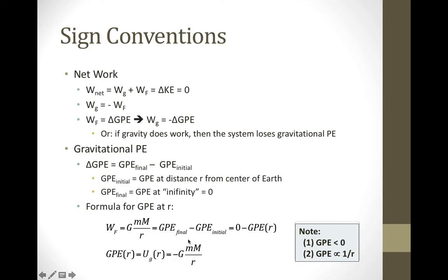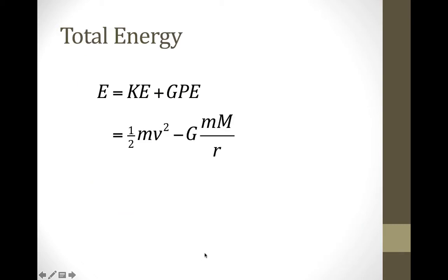Note a couple of things. First, the potential energy is negative — that's the result of our sign convention with potential energy being zero at infinity, which makes the potential energy negative at less than infinity. Also notice it follows an inverse, not inverse square, law. So the total energy of an object is its kinetic plus its potential: one-half mv squared minus GMm over r. That is the total energy of an object moving in a gravitational field following an inverse square law.